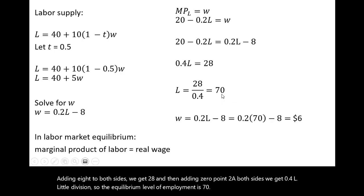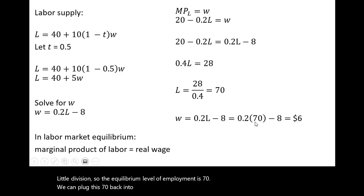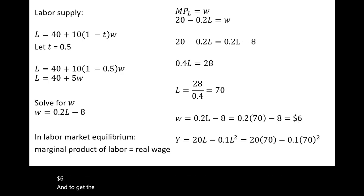We can plug this 70 back into the wage equation to get the equilibrium real wage, in this case $6. And to get the equilibrium output level, we will look at the production function and plug 70 in for L. Doing that, the output in this economy is 910.